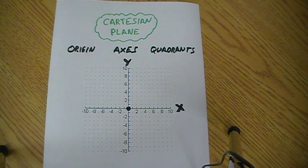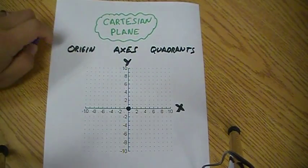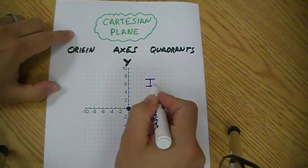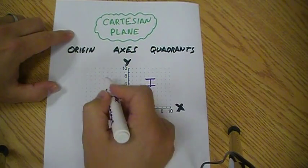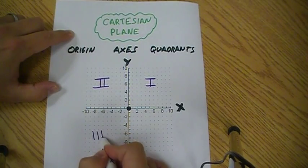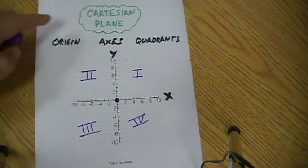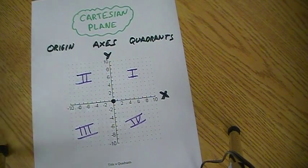The other thing that it has is quadrants. See it is divided into four areas. We call this area the first quadrant and then we go around counter-clockwise: second quadrant, third quadrant, and the fourth quadrant. We usually use roman numerals for that.